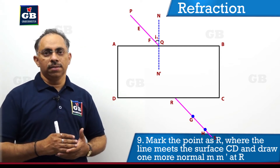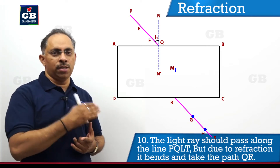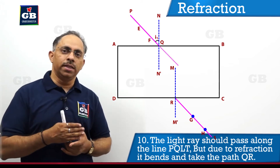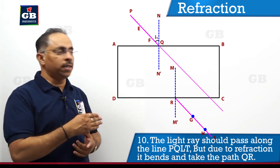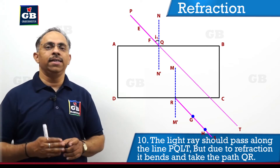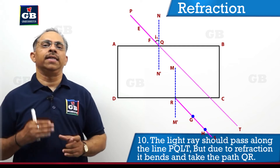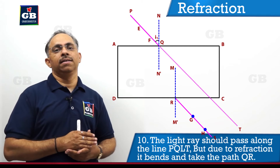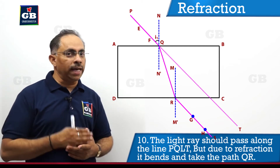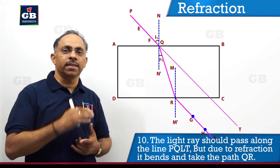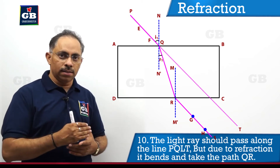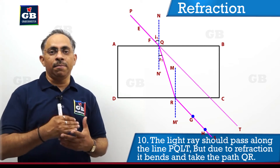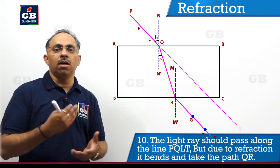Now, if you observe, the points R and Q are not in the same straight line. If you extend line PQ, you get the direction along LT. The light ray should have traveled along PQLT, but instead it is bending inside the glass slab along QR. Q is the point of incidence on AB, and R is the point of emergence on surface CD.